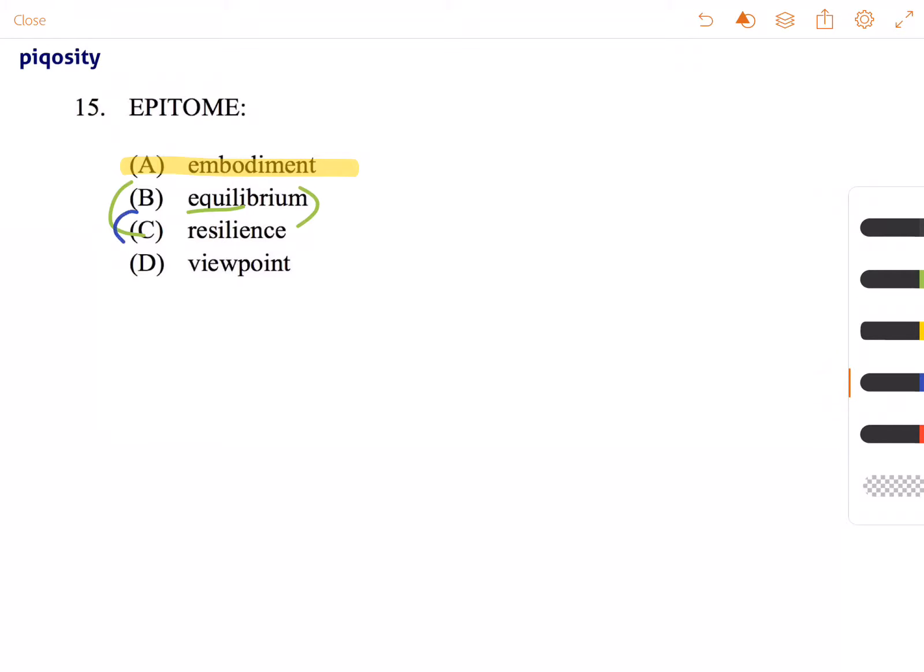Then we have C, resilience, which means capacity to recover quickly from difficulties. So that and equilibrium, that's not a shining example of something.